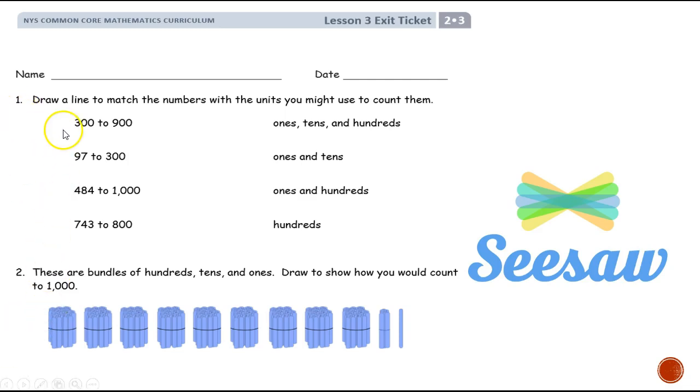For number one, you're going to draw lines to match the numbers with the units you might use to count them. So if you're counting from 30 to 900, would you use ones, tens, and hundreds? Would you use ones and tens? Would you use ones and hundreds? Or would you just use hundreds?